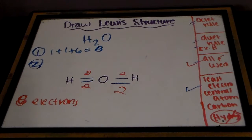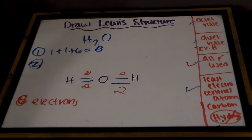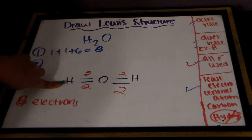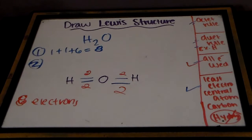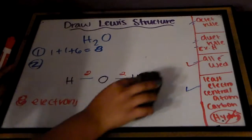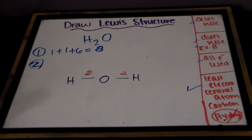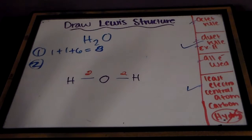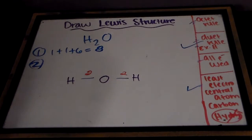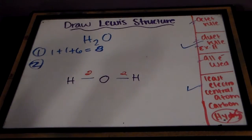Let's check our last two rules. The duet rule says hydrogens must only have two electrons connected to them. But if we look at this hydrogen, we see four electrons connected to it — two plus two — which violates the duet rule. So our structure must be wrong. I'm going to erase those two bonds we added. Keeping it as it is, we're satisfying the duet rule — both hydrogens only have two electrons.